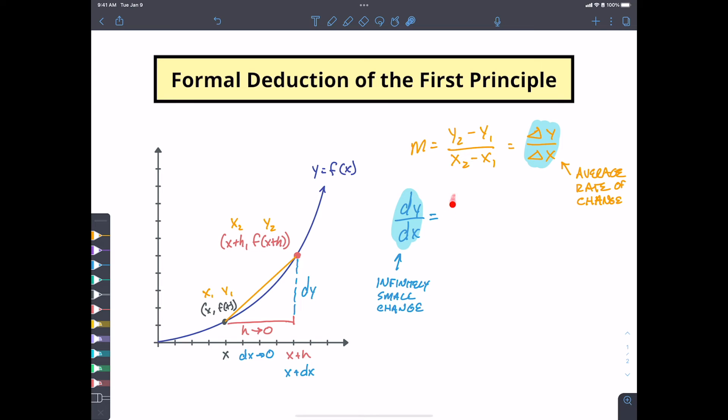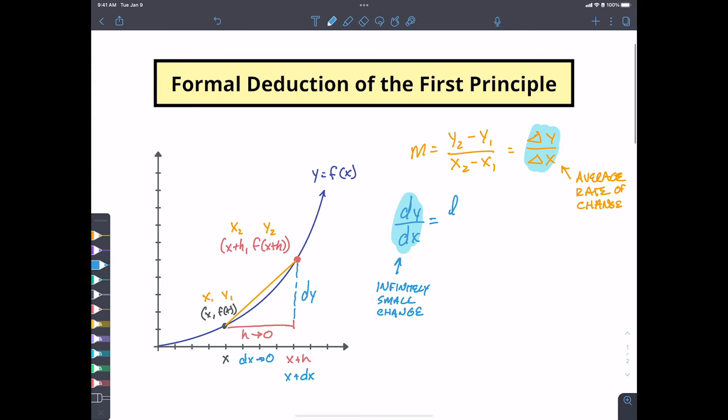we're going to have our limit as h approaches zero for f of x plus h, there's our y2, minus f of x, there's our y1, over x2, x plus h, minus x1. And this is kind of the building of our first principle.